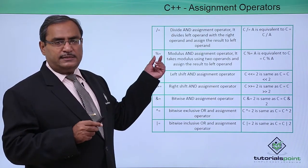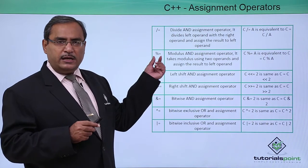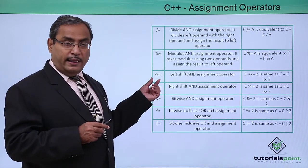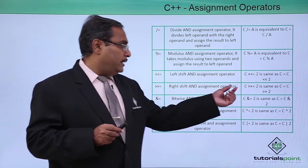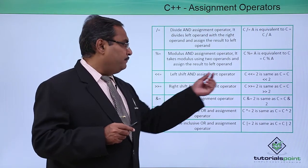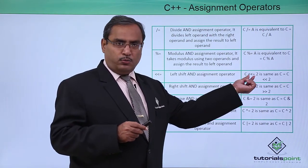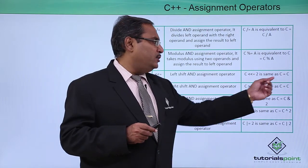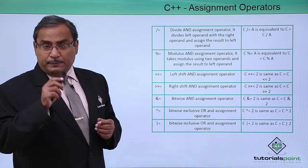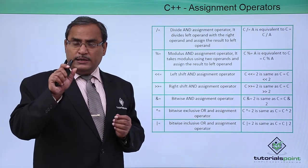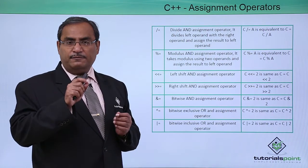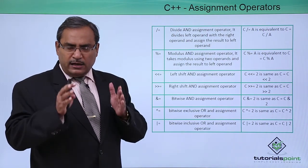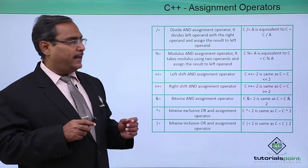We also have percentage-equal-to, where percentage means the remainder of division. Then there is left-shift-equal-to: C <<= 2 means C is equal to C left-shifted by 2. The value in C will be shifted towards the left-hand side by 2 bit positions, and the resultant value will be assigned back to C.